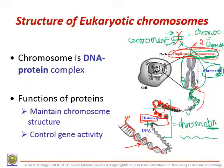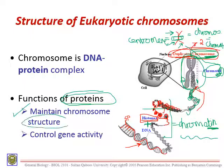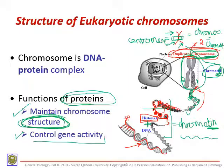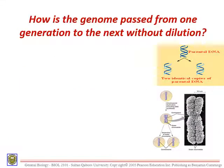The functions of histone proteins: first, to maintain the structure of chromosomes so that the DNA can fit inside the very tiny nucleus — the DNA has to wrap around the histone proteins. Second, scientists have found that histones also play a role in controlling gene activity.